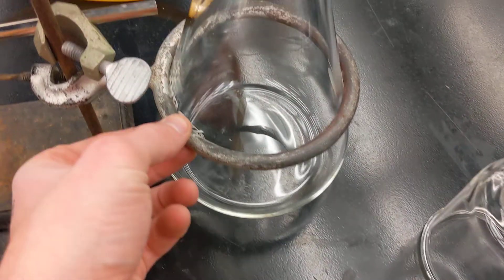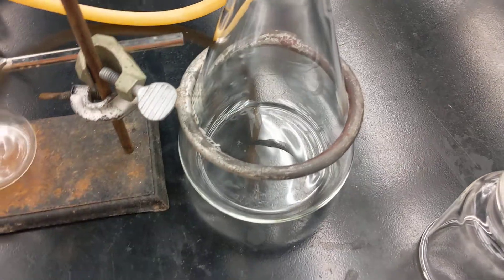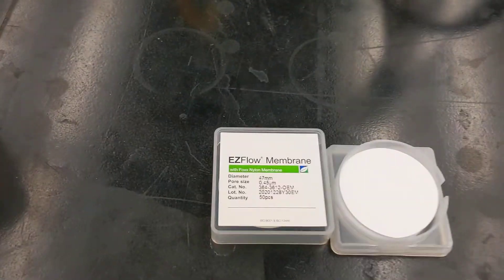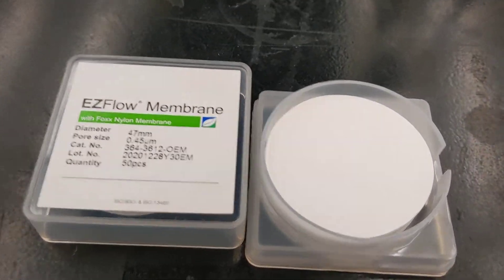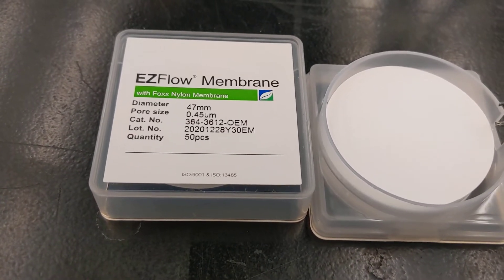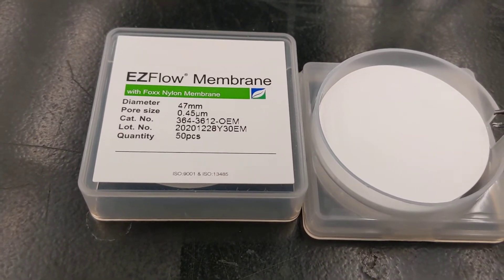Make sure that your flask can't tip over on this ring here. Then we'll take a 0.45 micron nylon filter, typically. Unless you have a specialty need, then you may use a PTFE or Teflon filter.